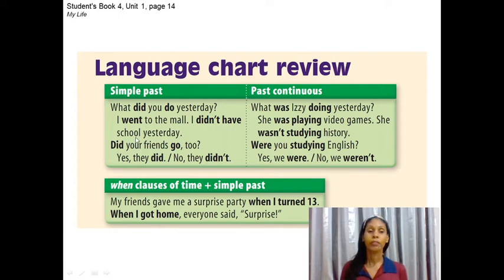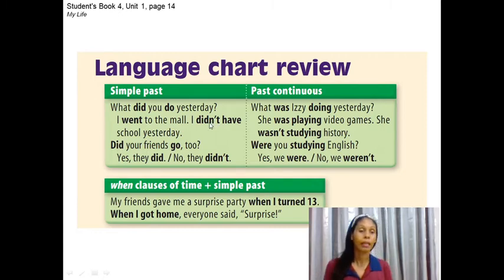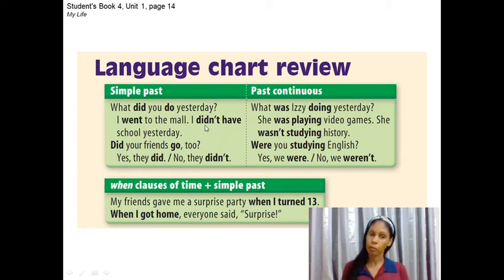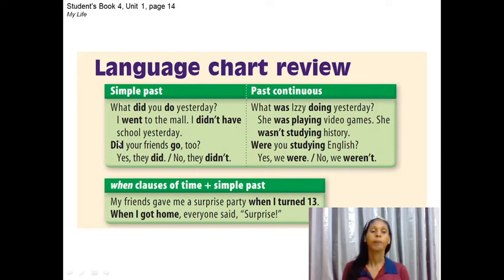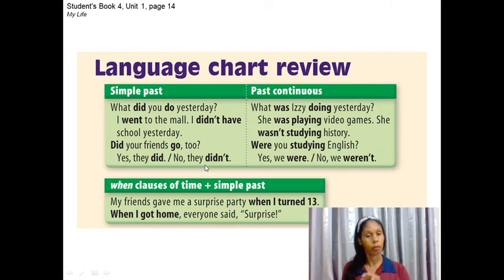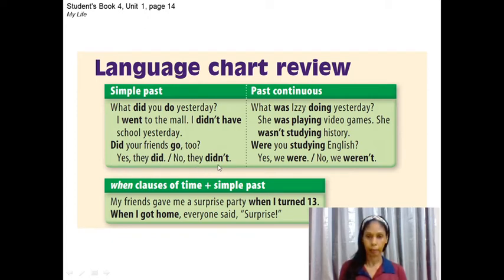When you answer, if the response is affirmative, you use the verb in the past. For example: 'I went to the mall.' The verb 'went' is the past tense of 'go', so instead of saying 'I go to the mall', you say 'I went to the mall.' For a negative sentence: 'I didn't have school yesterday' — here you use the auxiliary, so the main verb stays in the infinitive. For short answers, both affirmative and negative require the auxiliary: 'Yes, they did' / 'No, they didn't.'